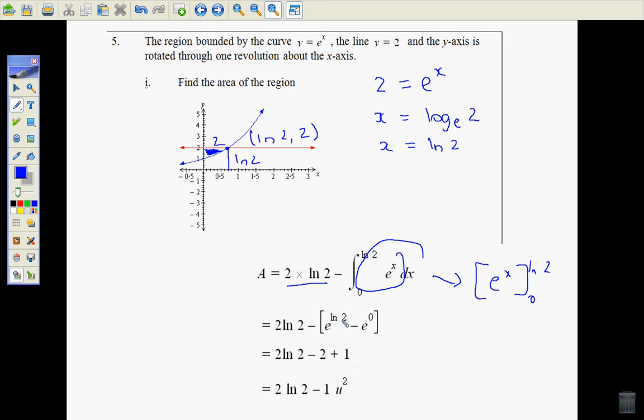E to the power of 0 is 1, e to the natural log of 2 equals 2. So it would be minus 2 and minus e to the 0 which is plus 1 which simplifies to minus 1. So there's our answer 2 natural log of 2 minus 1.